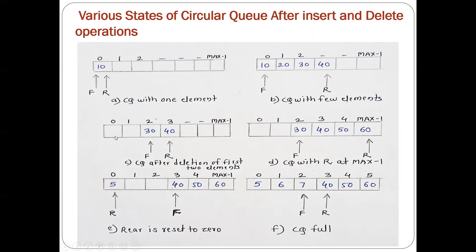After deleting the first two elements the queue will look like this: the front end is at the second position and rear end is at the third position. Now after doing some more insertions, the rear is at the last position that is max minus one, but the front is at the second position and the 0th index and the first index are actually empty. So after this, if we want to do a new insertion, the rear can be reset to 0, and after inserting one more element the rear is at the 0th position and the front is at the third position. Those empty spaces have been used.